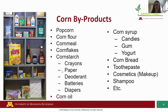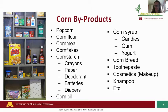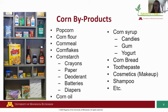First we're going to go over corn. The list you see here is just a small fraction of the byproducts that corn can produce. The most obvious is popcorn. There are also products such as corn flour, corn meal, and corn flakes — all things we ingest regularly. Many products we use daily are made from corn starch, including crayons, paper, deodorant, batteries, and diapers.